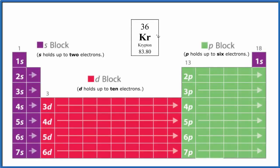Let's write the atomic orbital diagram for Krypton, that's Kr. The first thing we need to do before we can write the atomic orbital diagram for Krypton is write its electron configuration.